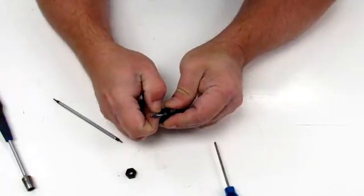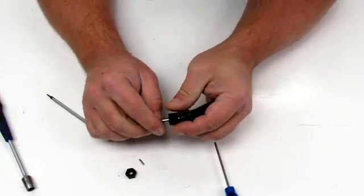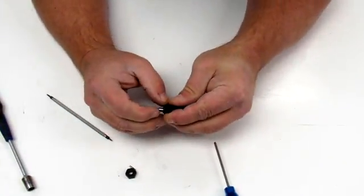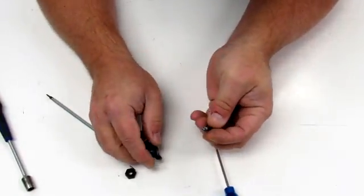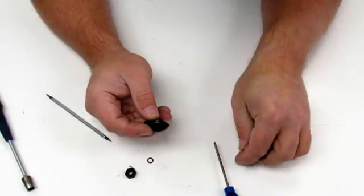You'll see the drive pin, push that out of the way. Next up is a very small little washer. We don't want to lose that little guy either.